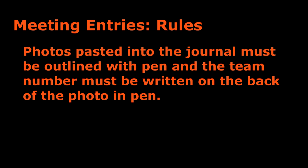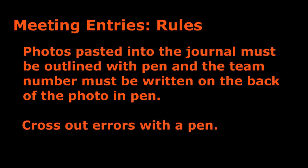This is just in case it falls out. Then the judges can see that there was supposed to be a picture there, and if they find the picture, they know who it belongs to. Also, if you're writing your entries and make an error or find an error in one of your entries after you print them, cross out the error with a single line in pen, and write down the date you made the correction, and the initials of whoever wrote the entry.